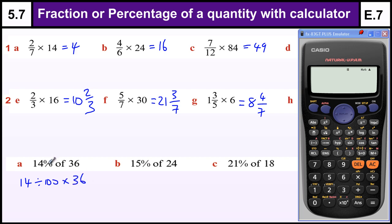So the percent means 100. So 15 divided by 100 of 24. Of means times, times 24. 21 divided by 100 times 18. So let's type those into the calculator.